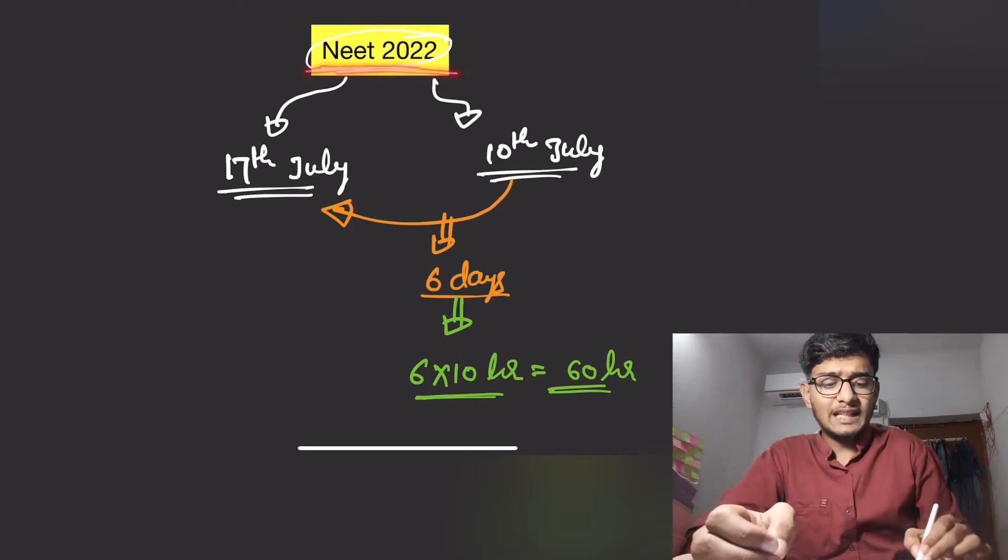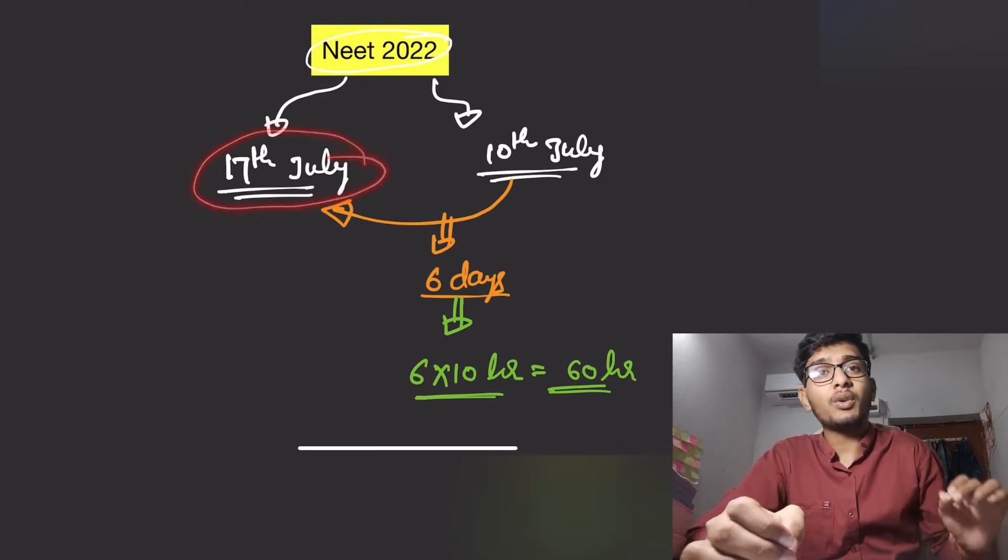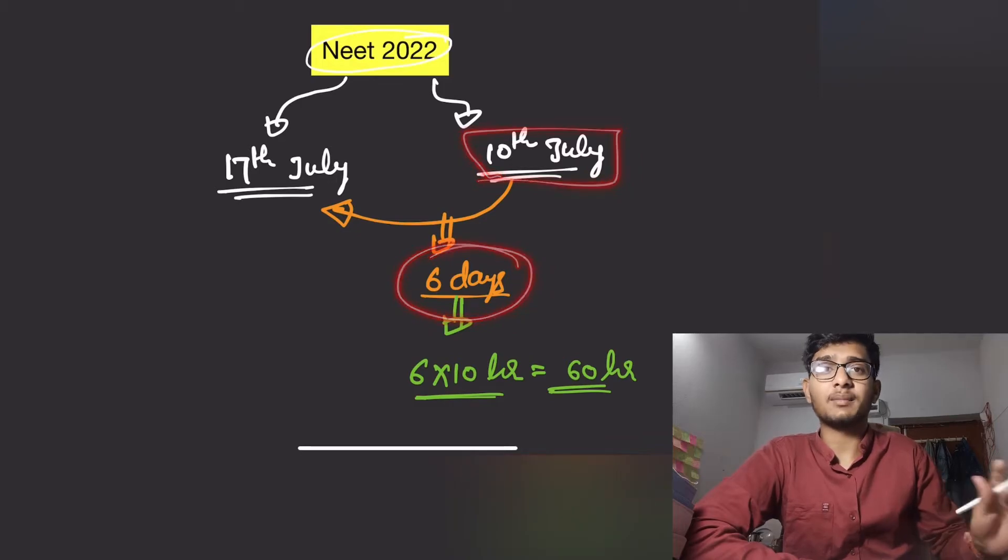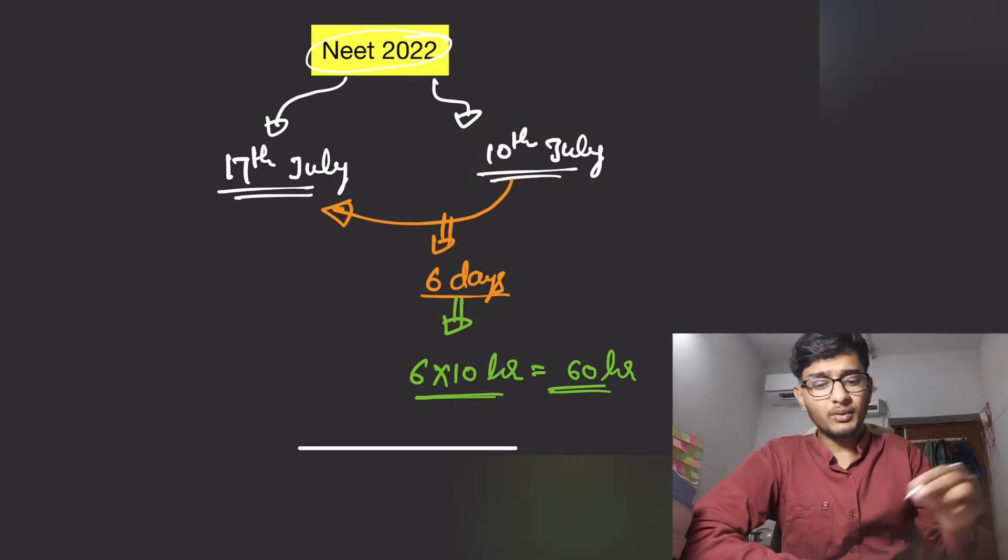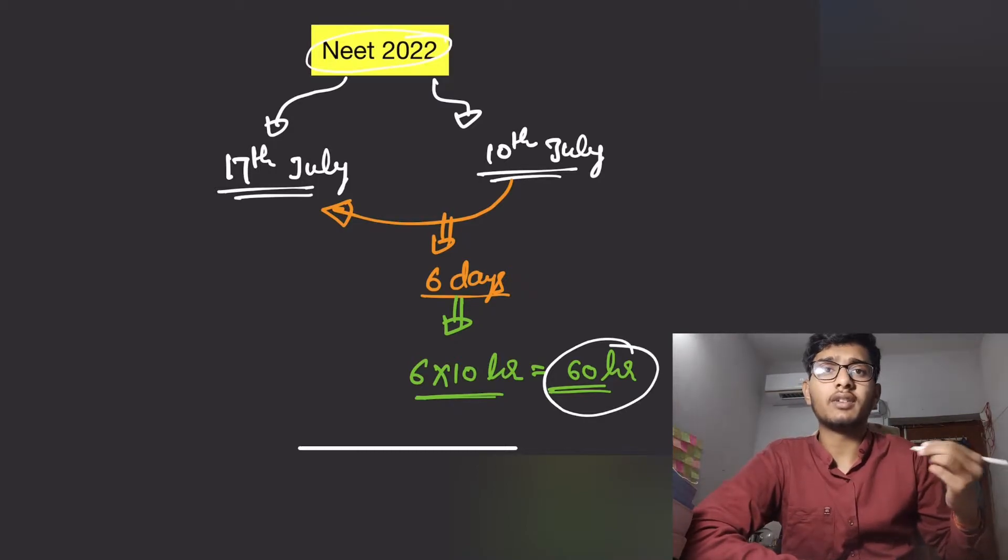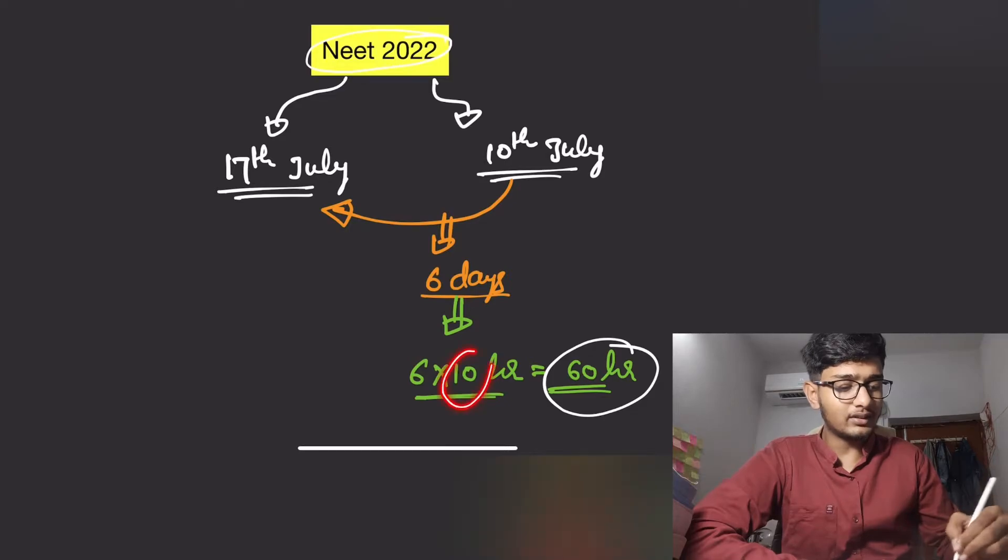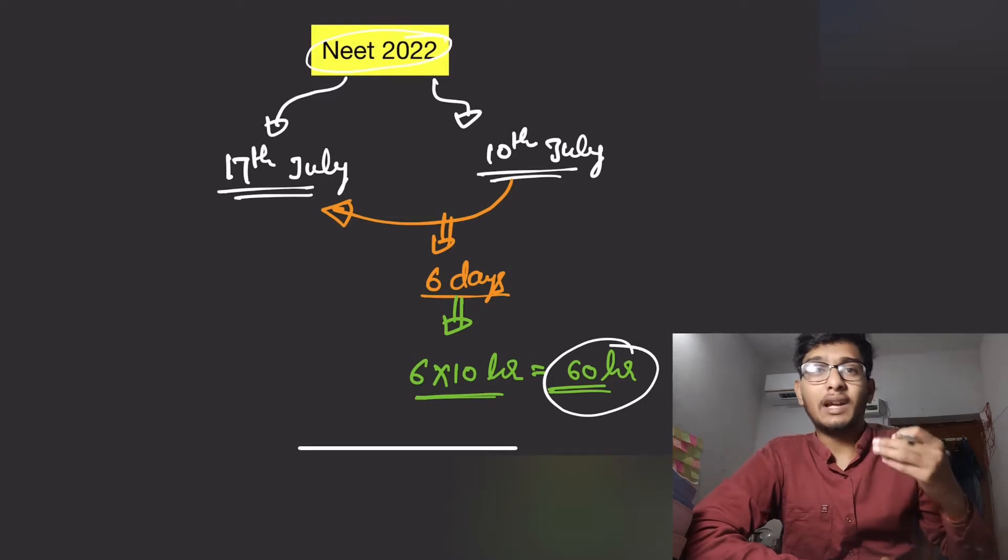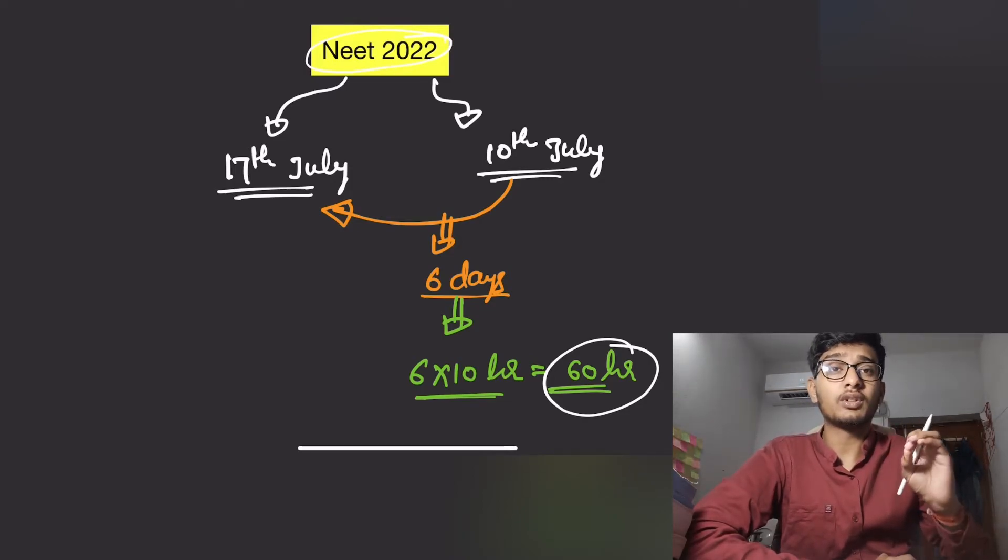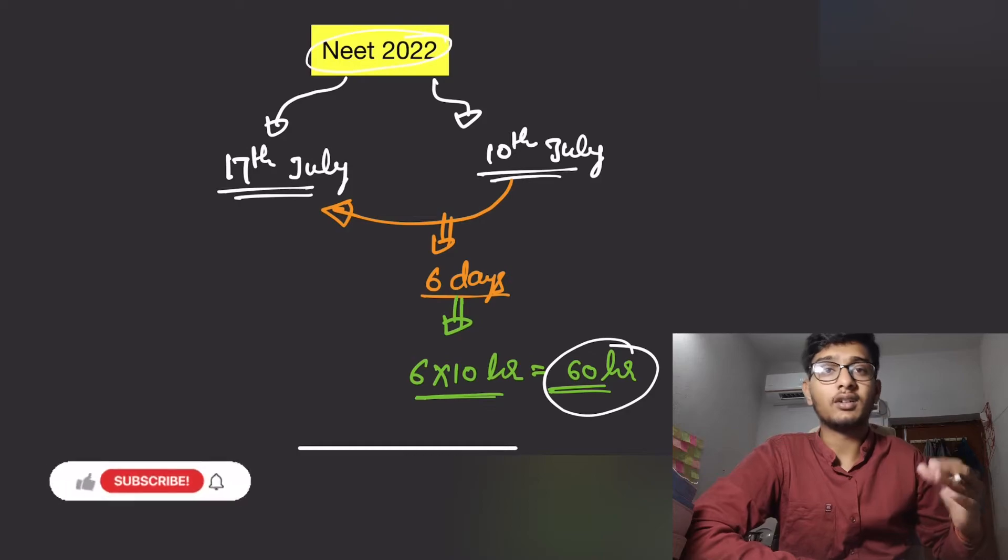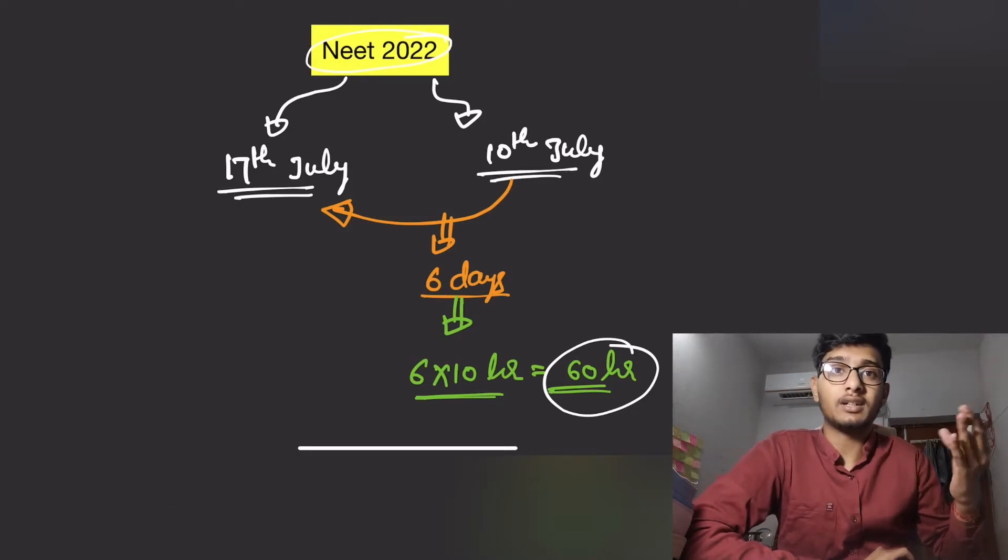NEET 2022 exam date is 17th July. If you are watching this video today, on 10th July, you have six complete days. Six days means you have 60 hours, because here I am expecting that you will read 10 hours a day. So don't waste your time thinking about what will happen if you fail in the examination. You should just give your full focus on your study and try to utilize this 60 hours in a very productive way.